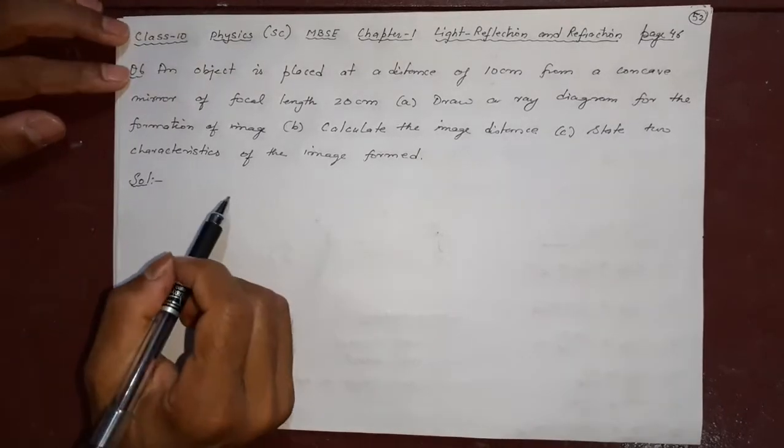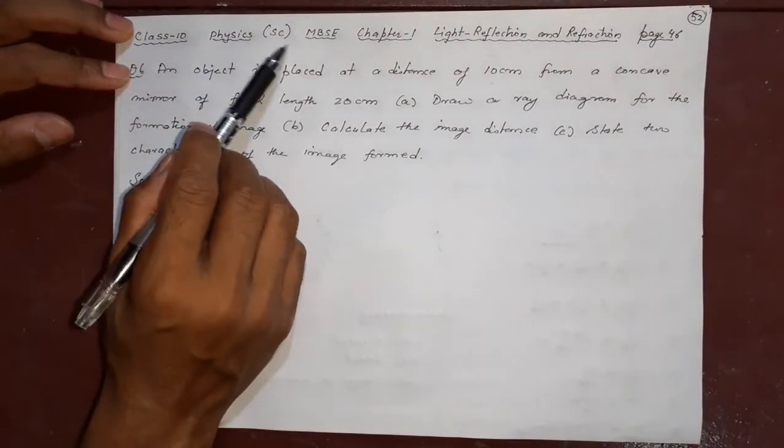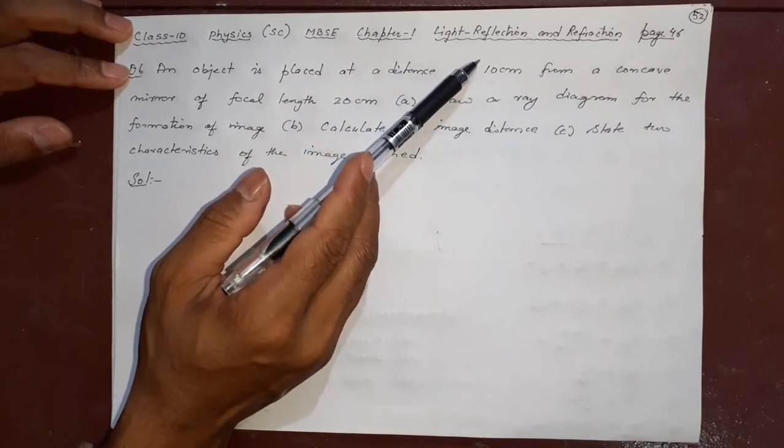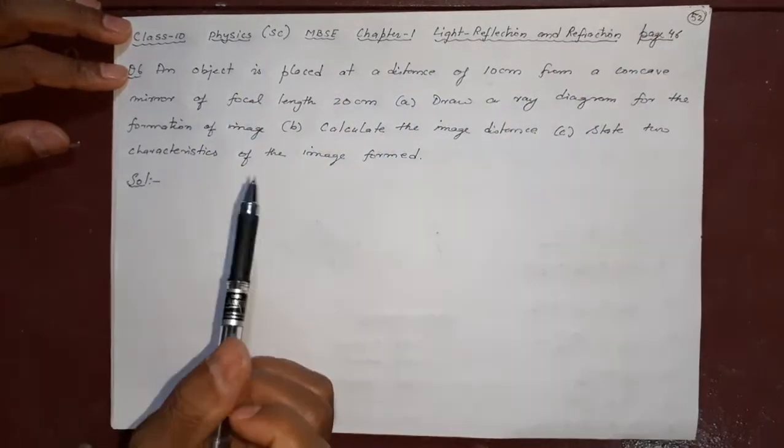Welcome viewers to the SD online classes. In this lecture, we are going to do Physics of Class 10, Mizoram Board of School Education, Chapter 1. The name of the chapter is Light, Reflection and Refraction. Page number in your textbook will be 46. Let's see the question. This is a numerical.